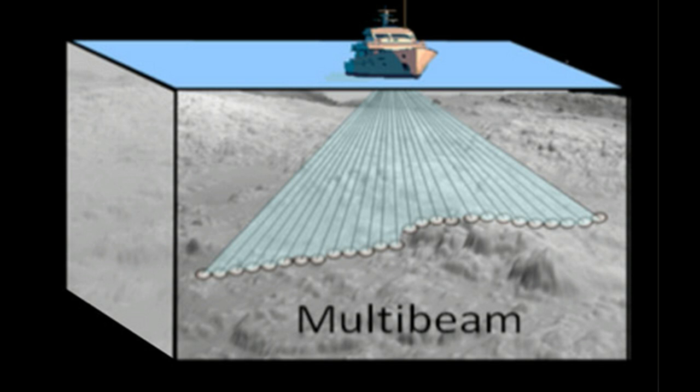The ability of bathymetric sonars to accurately position each pixel on the seafloor adds to the clarity of a mosaic. This pixel positioning accuracy is the biggest difference between side-scan sonar and bathymetric sonar mosaics.